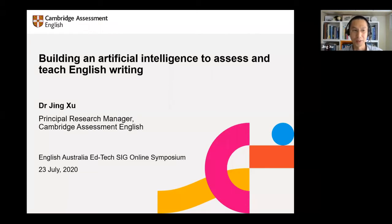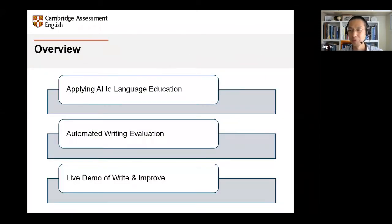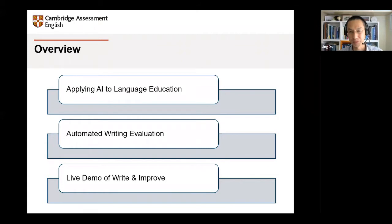The topic of my talk today is building an artificial intelligence to assess and teach English writing. I plan to talk for about 10 minutes. I will start by talking about Cambridge's vision for applying AI to language education, then narrow the focus to automated writing assessment. I will leave about two to three minutes to showcase a product called Writing Improve, an online learning tool to improve writing developed based on AI technology.